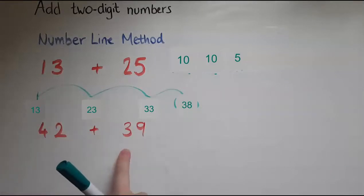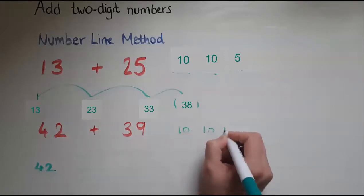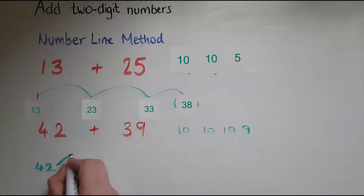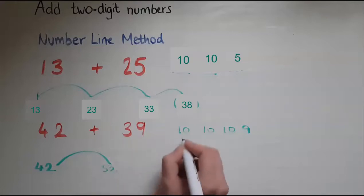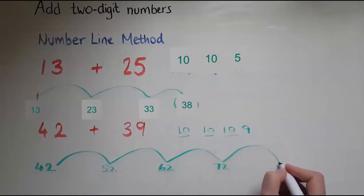Now we'll look at another example. So we've got now 42, so we're starting with 42. I'll add to that there's 10 and 10 and 10 and 9. So I'll add 10 to make 52 and another 10 to make 62 and another 10 to make 72 and 9 to make 81. And that gives me the answer. So this is how you use the number line method to add two two-digit numbers.